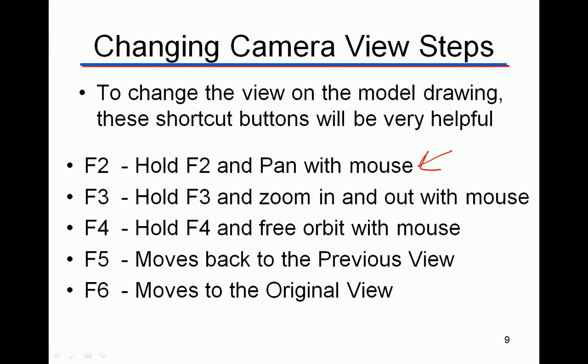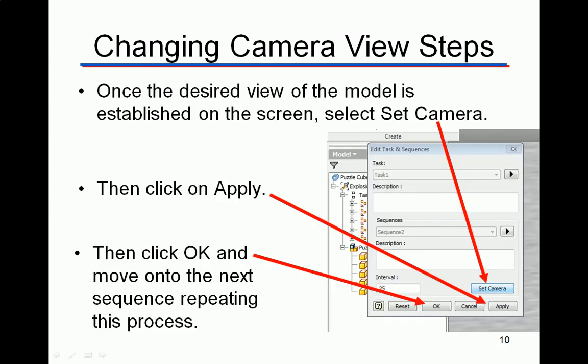The one I use all the time is F4 — that's the free orbit with the mouse. Hold F4 and move your mouse within the free orbit tool to rotate your part. As soon as you release F4, the free orbit goes away, so there's no clicking over on the right side of the screen. F5 is very convenient because if you make a mistake it goes back to the previous view — kind of like Ctrl+Z in Microsoft Office. F6 brings you back to the original view if you really messed something up. Take notes on those.